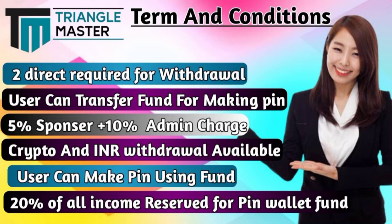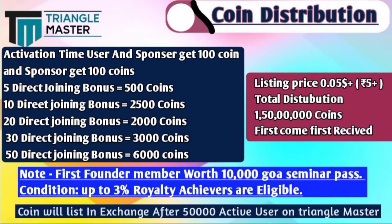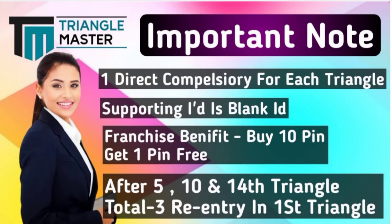Any user can make a pin using their wallet fund. 20% of all income is reserved for the pin wallet fund. At activation, both user and sponsor get 100 coins. Total distribution is 150,000 coins, and the listing price is 5 cents. Complete 5 direct joins to get 500 coins; 10 directs for 2,500 coins; 20 directs for 2,000 coins; 30 directs for 3,000 coins; 50 directs for 6,000 coins. The first founder member worth 10,000 gets a seminar pass — you must achieve 3 royalty achievers. The coin will be listed on exchange after 50,000 active users on Tringle Master. One direct is compulsory for each triangle; purchase 10 pins at once and get one pin free.